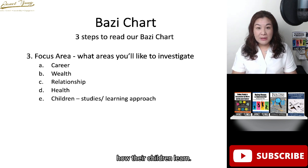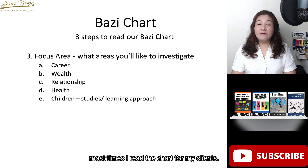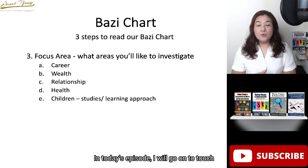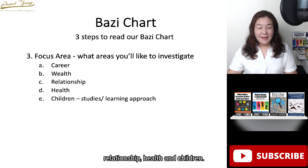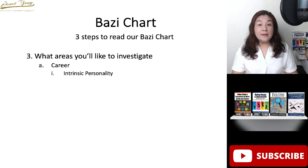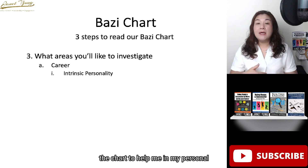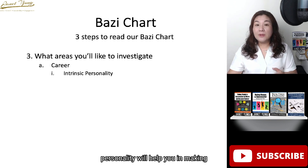In today's episode I will focus on career so that it will not overwhelm you, and in future episodes I'll talk about wealth, relationship, health and children. Understanding your intrinsic personality will help you make the right decisions so that you'll be happier in the long term. When looking at career, we look at the DO (direct officer), 7K (seven killings), DW (direct wealth), and IW (indirect wealth) profiles.